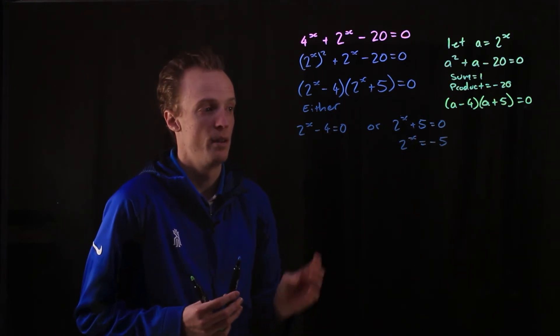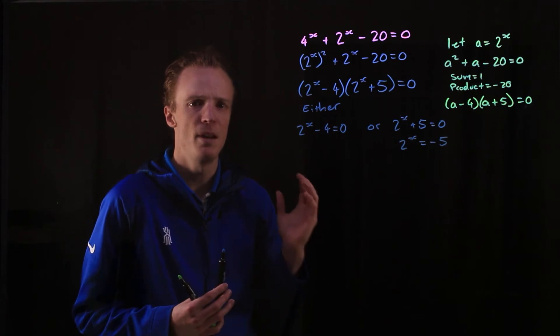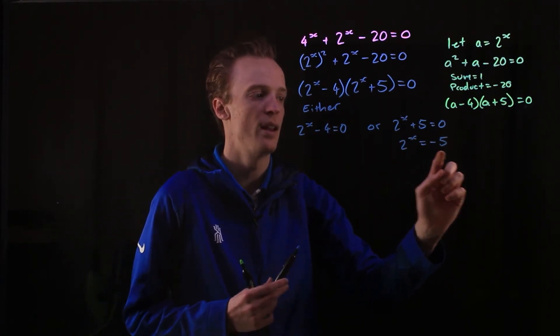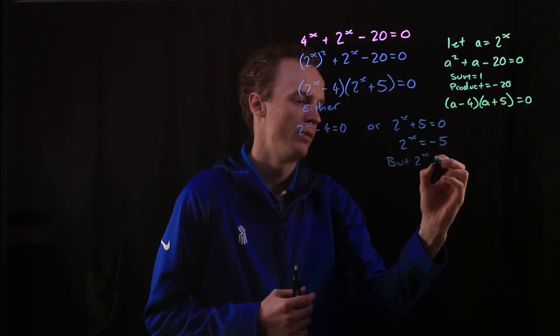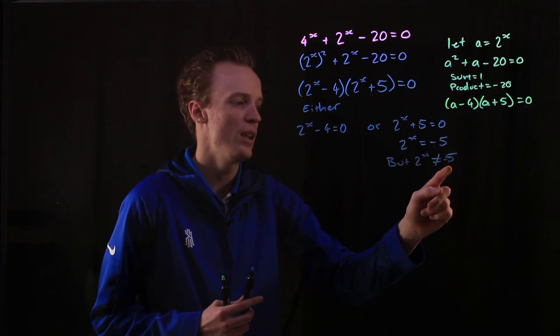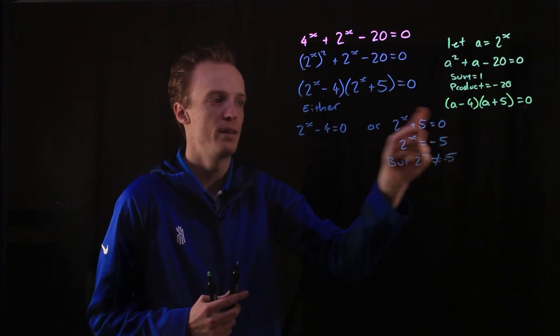But now I know there's a problem. I've got 2^x is equal to a negative number. It doesn't matter what value of x I put in, I cannot make this a negative number. So therefore, my 2^x cannot equal negative 5. So this part here cannot be solved.